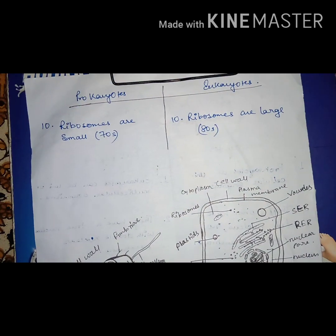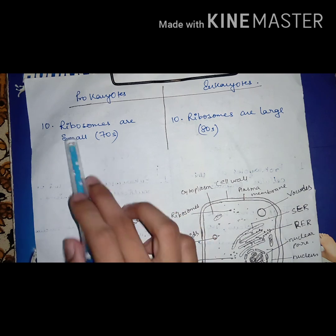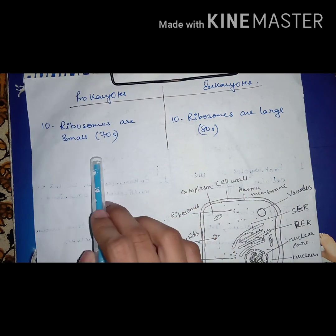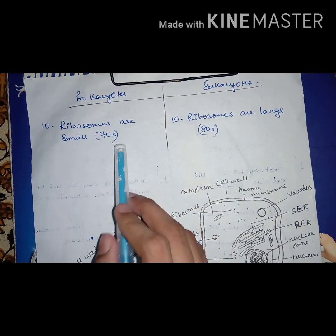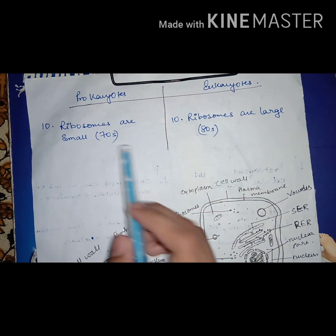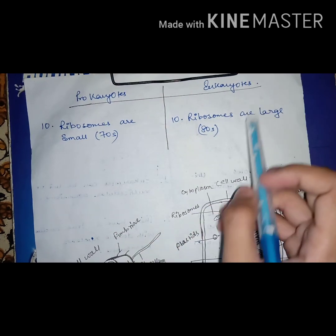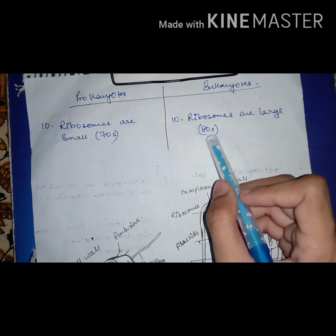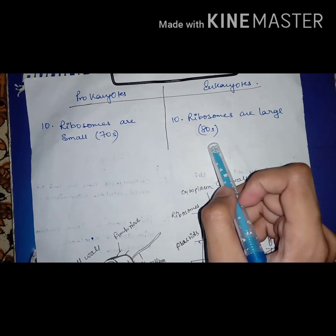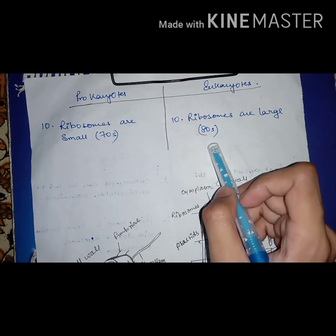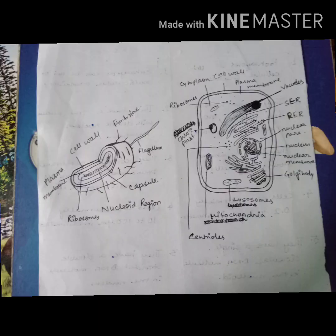In prokaryotes, ribosomes are smaller, i.e. 70S, whereas in eukaryotes ribosomes are larger, that is 80S.